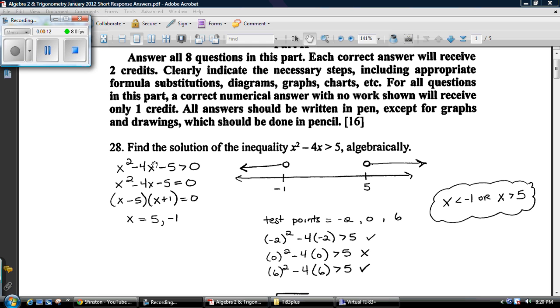You've got to find the solution to this. The first thing you've got to do is set it equal to zero. Well, not equal to zero, but you're going to have to subtract this 5 over. Then set it equal to zero and find the critical values, the turning points of the parabola. Find these.